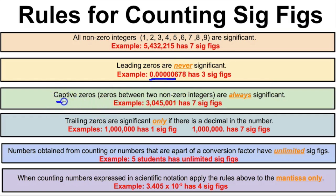Rule three: captive zeros are zeros between two non-zero integers and they are always significant. For example, this zero is a captive zero between the three and the four. These zeros are captive zeros between the five and the one. Counting all digits in this number gives us seven sig figs.